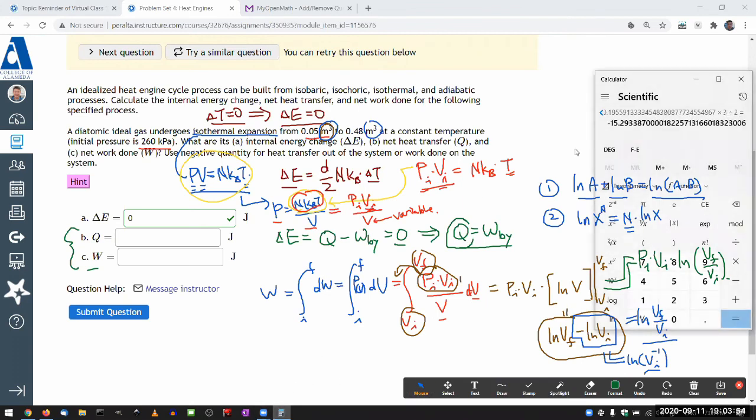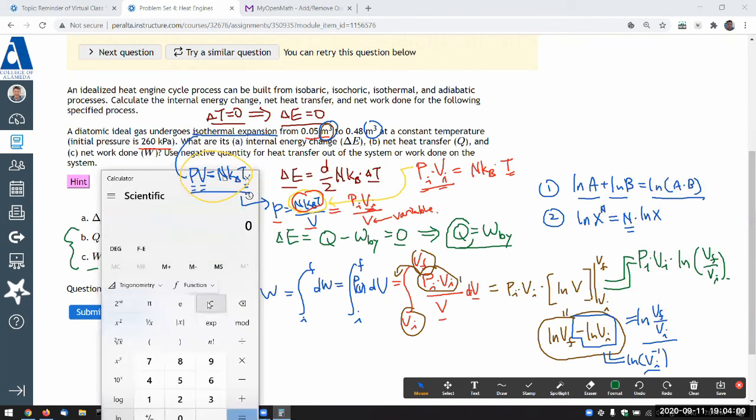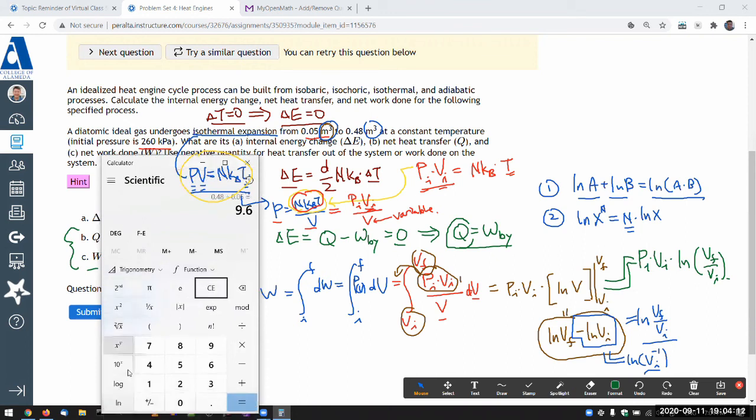Let me do the natural log first. It's always kind of avoids mistakes to do the more complicated expressions first. So V final is 0.48 cubic meter divided by V initial 0.05 cubic meter. Take the natural log of that.